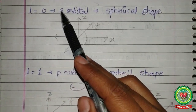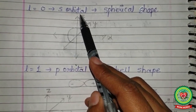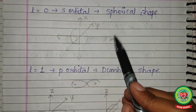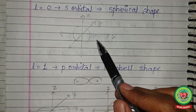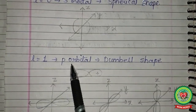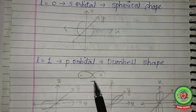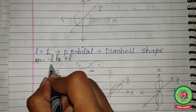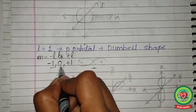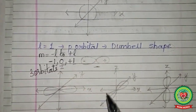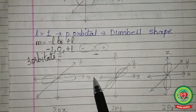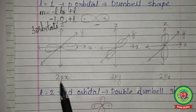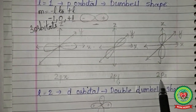Regarding the shape of orbitals: if l = 0, the orbital is designated as s and has a spherical shape — like a sphere in the xyz coordinate system with no particular direction. If l = 1, it is a p orbital with a dumbbell shape. Since m = −1, 0, +1 when l = 1, there are three p orbitals: along the x-axis (2px), y-axis (2py), and z-axis (2pz).